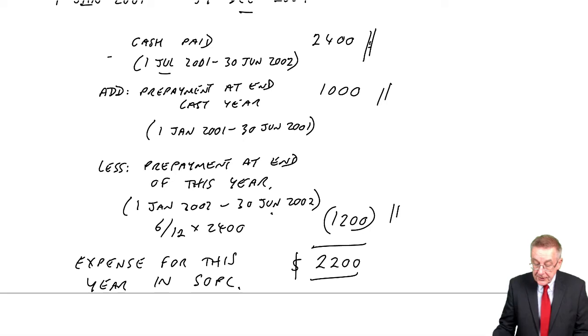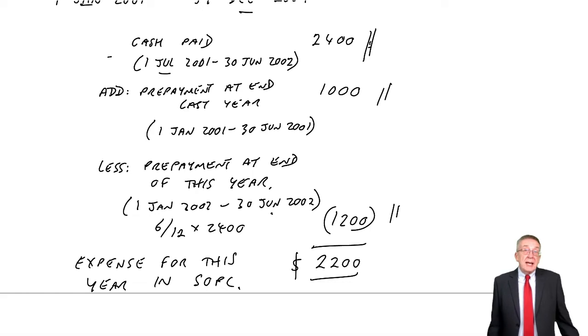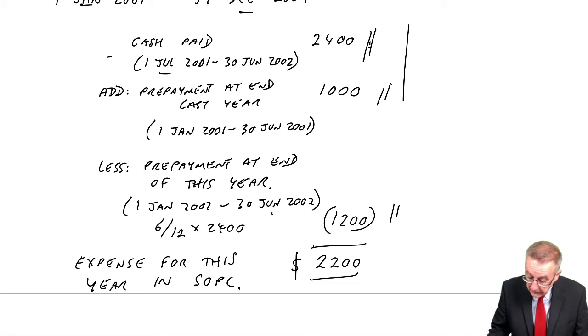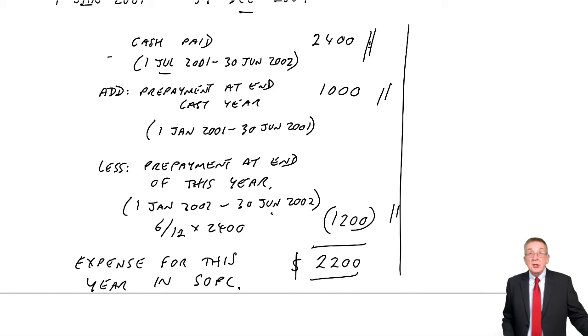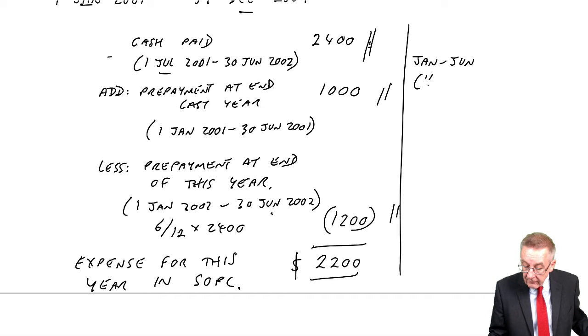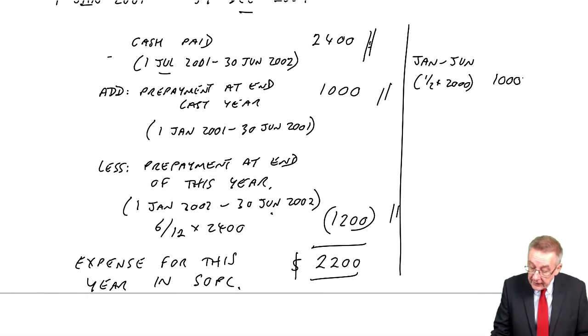And what figure do I end up with? $2,200. That is the expense for this year in the Statement of Profit or Loss. Now, you can get the same figure several ways, depending on how the information is given. The expense this year was half of last year's bill of $2,000, so $1,000 there, together with half of this year's bill.